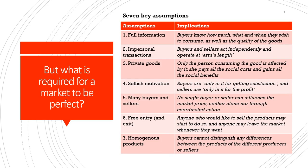The fifth assumption is that there are many buyers and sellers in a perfectly competitive market. Because the numbers are so large, no single buyer or single seller can influence the market price, nor can they collude in a coordinated manner to influence it. This distinguishes perfectly competitive markets from imperfectly competitive ones such as monopoly, duopoly, or oligopolistic markets, where a few sellers may collude and influence market price.